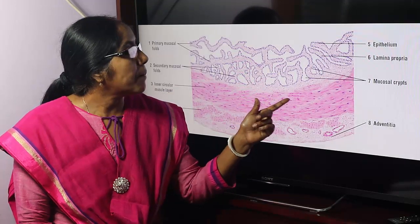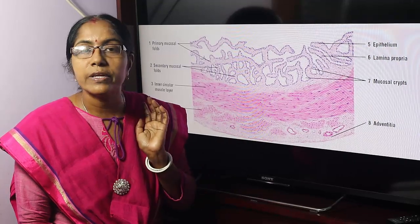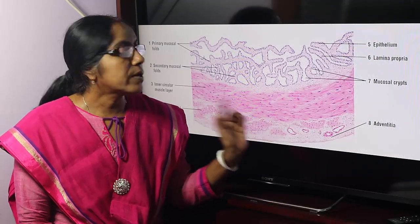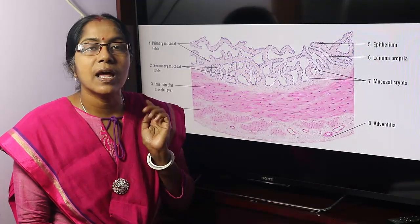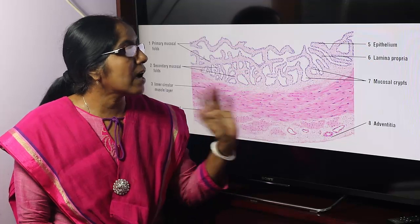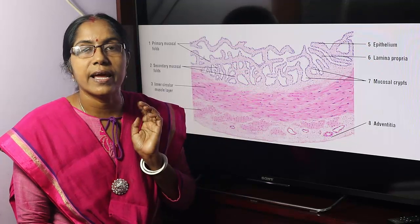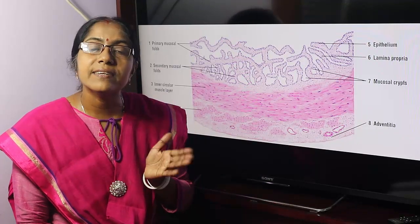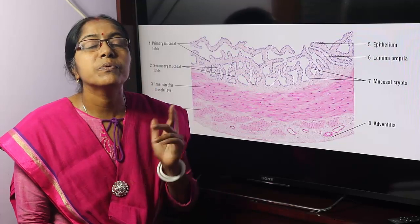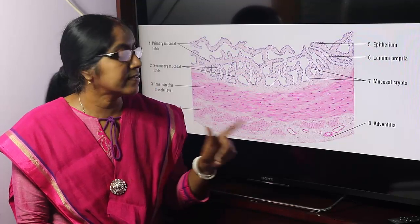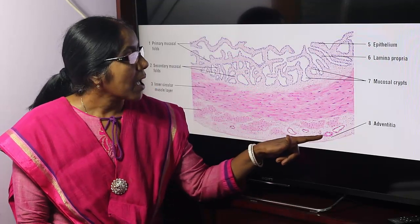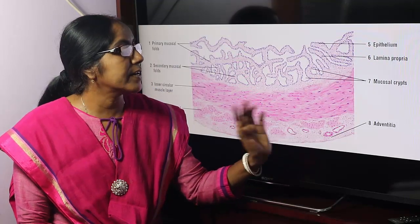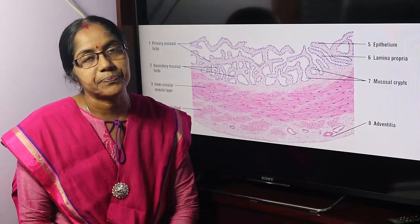The muscle coat is composed of two layers: outer longitudinal and inner circular layer. The adventitia is the connective tissue layer which contains numerous blood vessels — arteries, veins, etc.